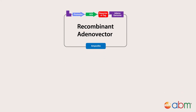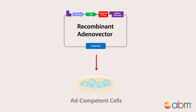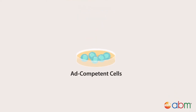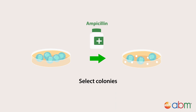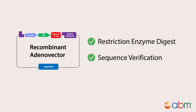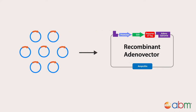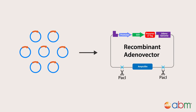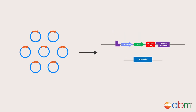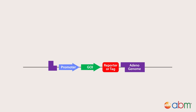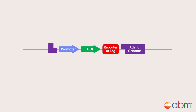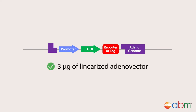Finally, transform the final ligated recombinant adenovirus vector into competent cells and select colonies using ampicillin. Check your recombinant adenoviruses by restriction digest or sequence verification, then amplify and linearize it at the predetermined PAC1 sites for virus production. Use the long fragment containing your gene of interest and the adenoviral genome for transfection. Ensure you have at least 3 micrograms of linearized adenoviruses for transfection.